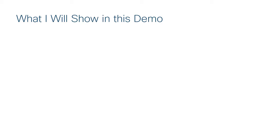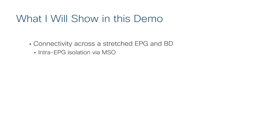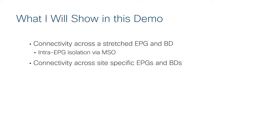I'm going to show you a couple of different examples. I'll start out by establishing connectivity using a stretched EPG and a bridge domain that lives across both sites. Then I'm going to show you a security feature called intra-EPG isolation, which allows me to tightly control communications inside an EPG. My next example will show connectivity across site-specific EPGs and bridge domains, where I'll apply contracts across sites and talk about the existence of shadow objects.